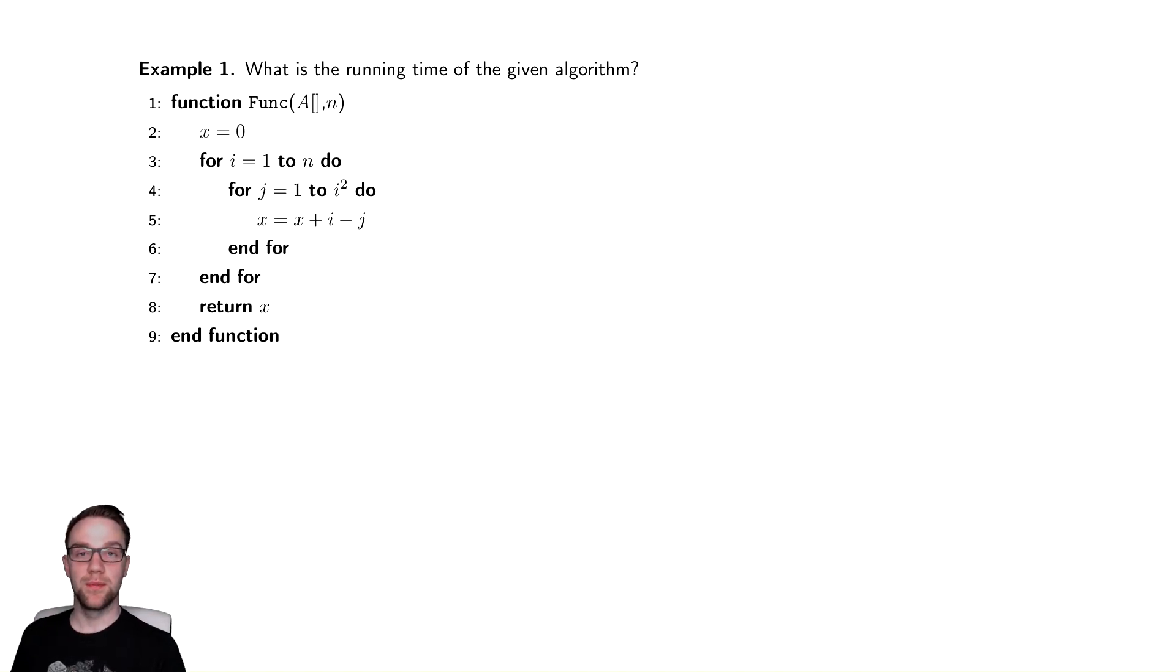So first, we observe that the innermost line of code, the one that is most nested inside of loops, this line here, involves just basic arithmetic - adding, subtracting, assigning, all of that. So we assume that takes constant time. So we're going to write next to it that constant c.